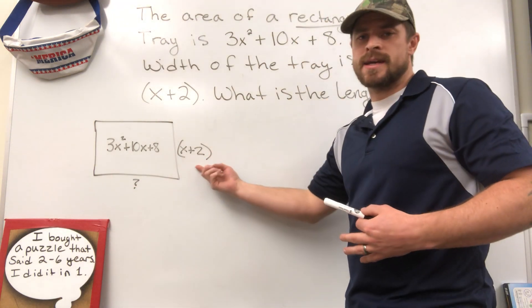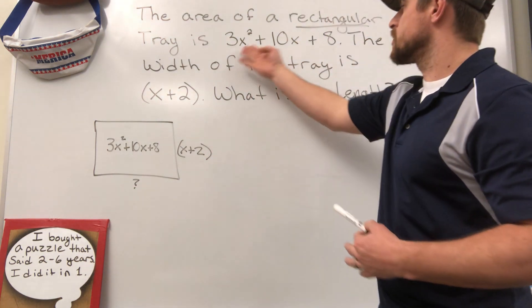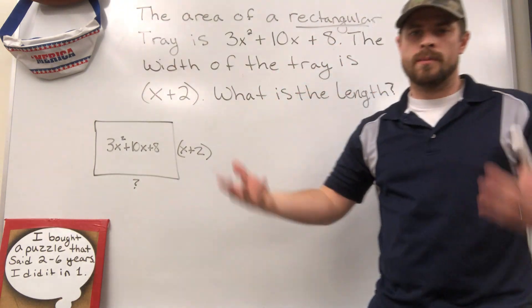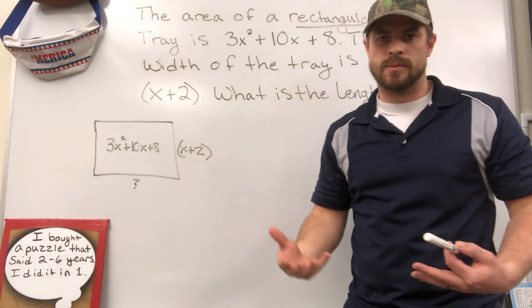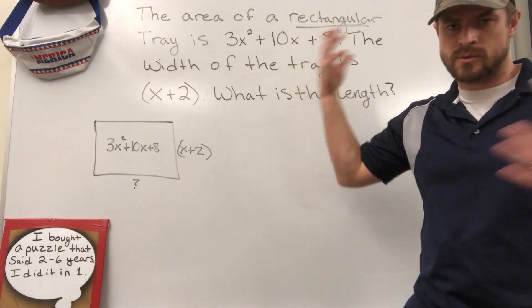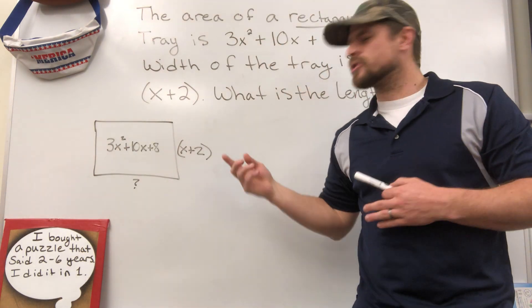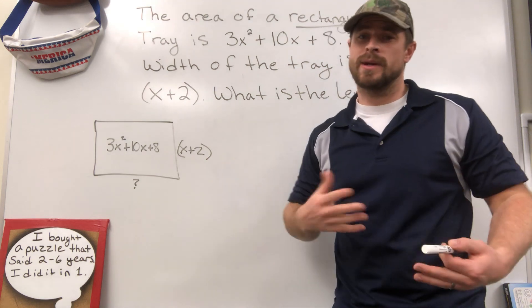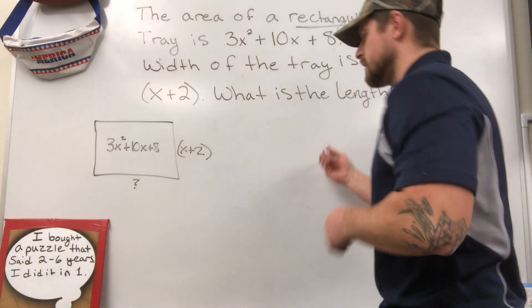So we also know that a binomial times a binomial here usually will create a trinomial that looks like this. If you're not given x plus 2, you would just factor this. So you'd go about it and you would just factor the trinomial. One, two, three terms, we call that a trinomial. But because you're given a piece of information, there's a quicker way to go about it. Let me show you how to do that right now.